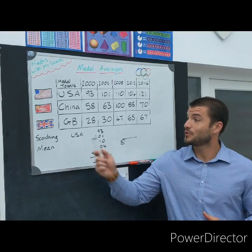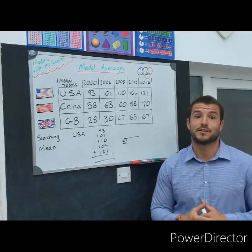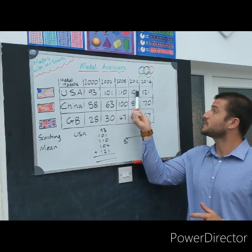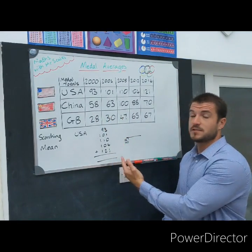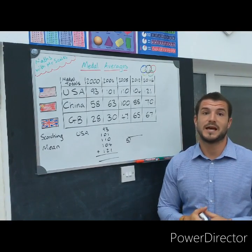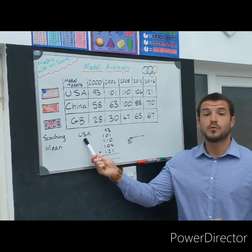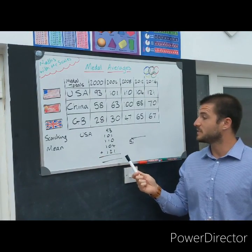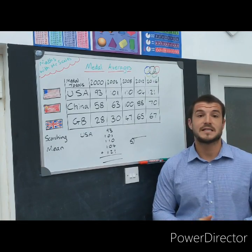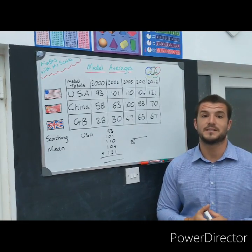Okay, for those of you on our scorching challenge, you're attempting to work out the mean. To work out the mean, that is when we add all five of the numbers up together — we might lay out something like this — and then we divide by how many sets of data we have. Now for each of these we have five sets of data, so for example USA: you would add the five numbers up and then divide that answer by five. You're doing the same for USA, China, and GB. You can leave your answer as a remainder.